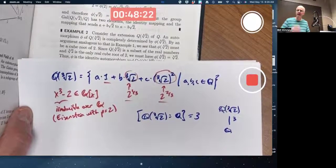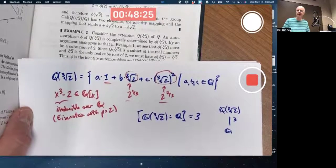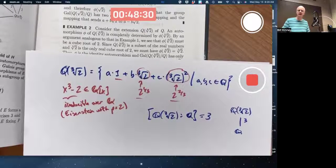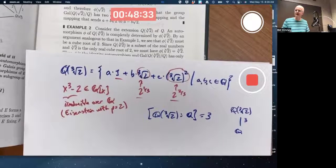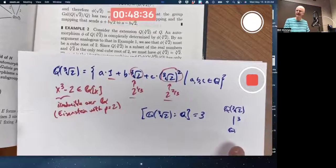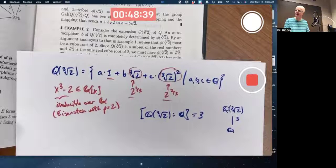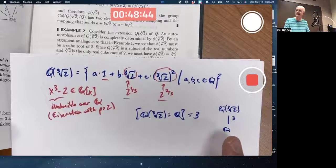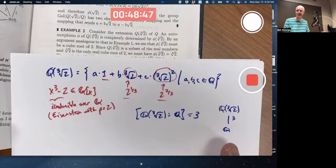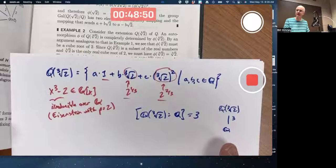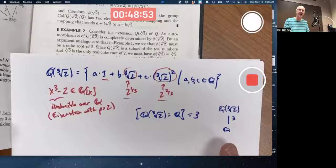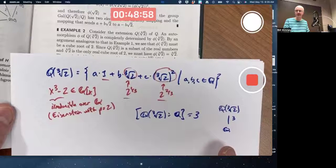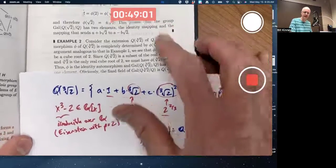And if what happened with example 1 were to work here it would mean that when we think about the Galois group of this field extension over the rationals it should be a cyclic group of order 3 or something. There should be a subgroup lattice analogous to this. But there's not. This is a situation where the fundamental theorem of Galois theory does not apply.